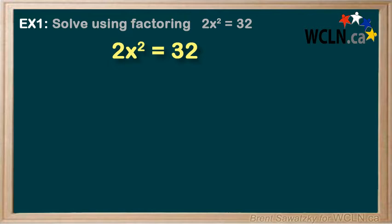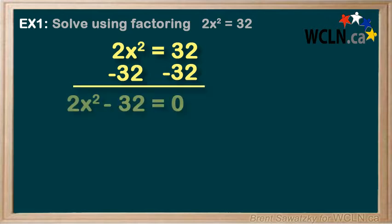First we'll get the zero on the right. That's our first step. And to do that we'll subtract 32 from both sides. And so we're left with 2x squared minus 32 equals zero.